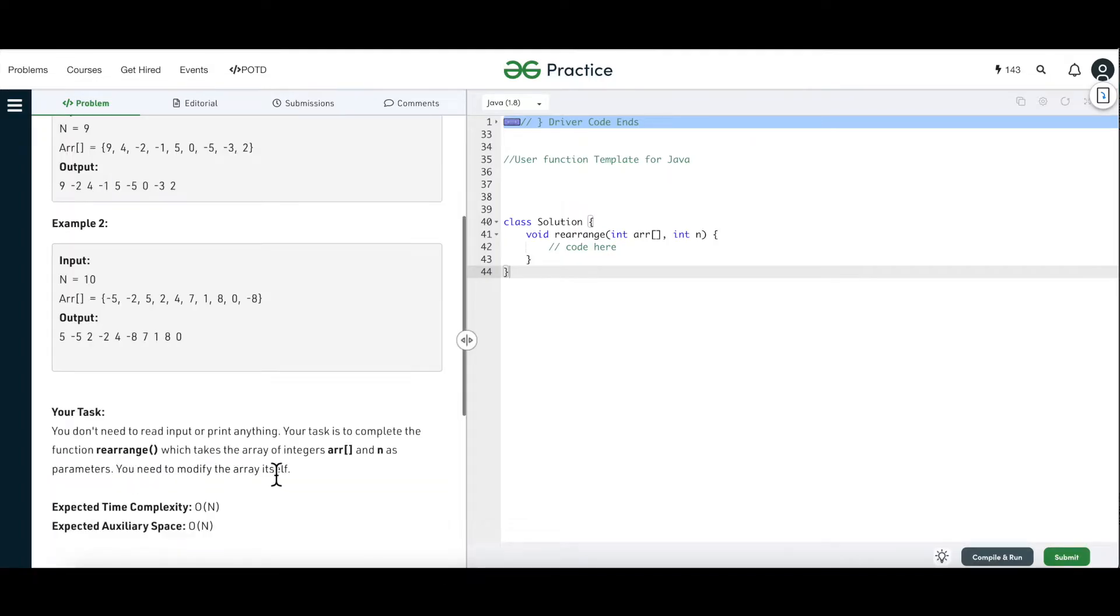We have to modify the array itself. So it is an in-place modification of array. We should not be creating another new array and then placing the numbers one by one. We have to modify the same array itself and that is where the trick of the question lies. Expected time complexity is O(N), it is linear and space, additional space if required is again order of N.